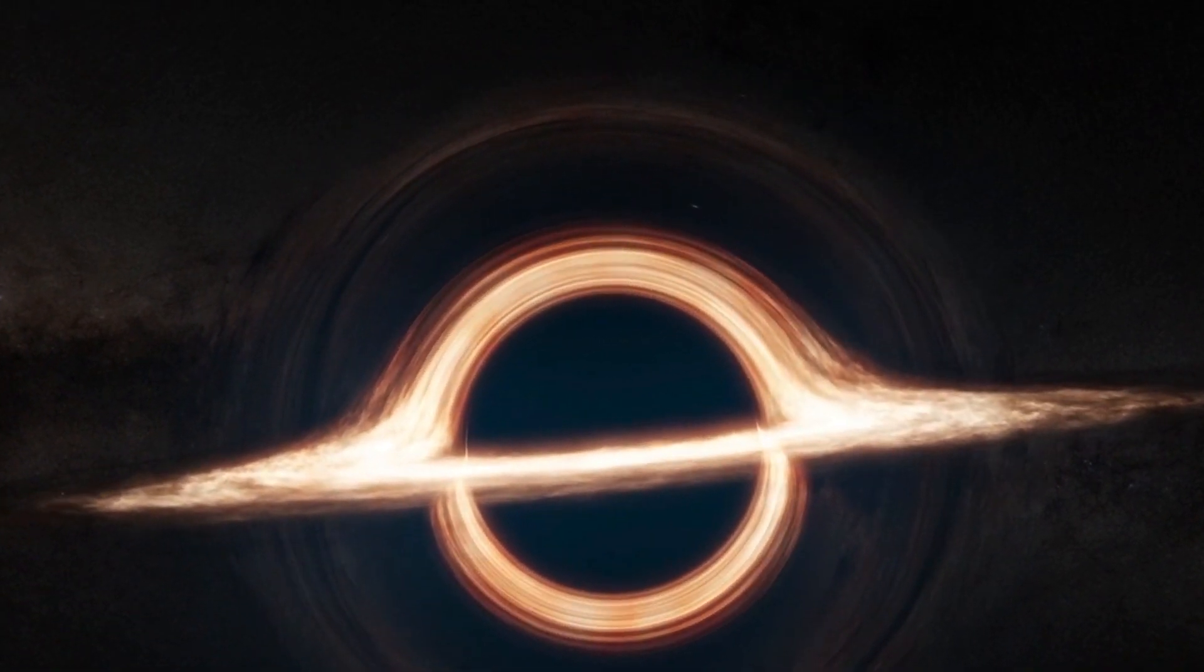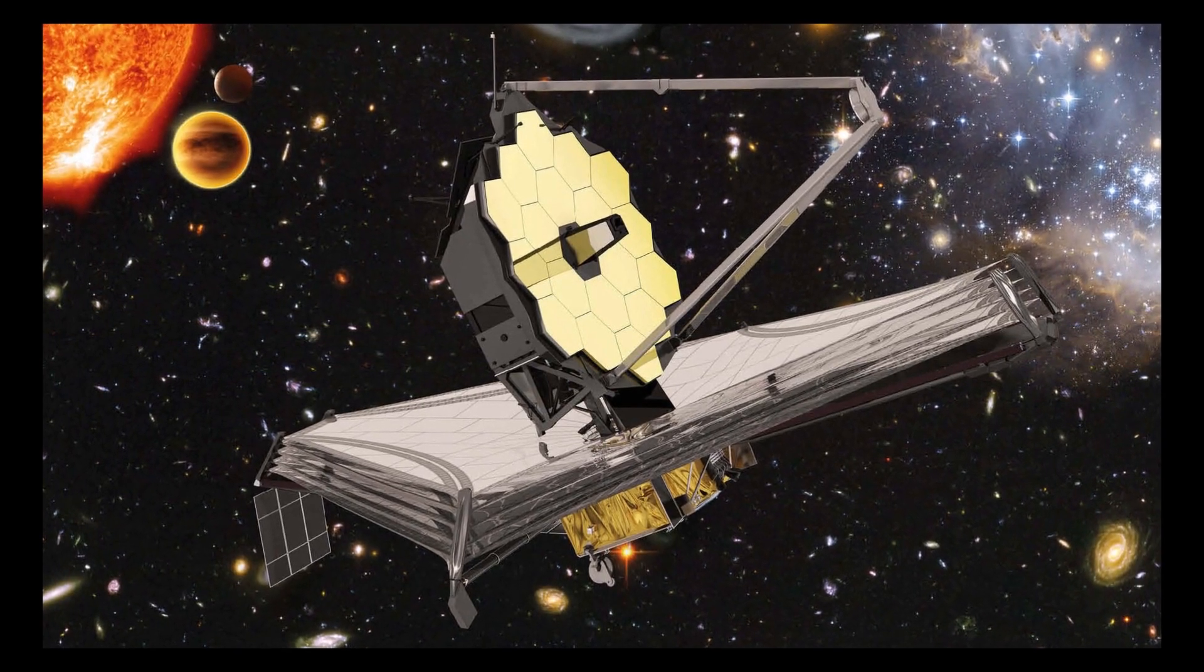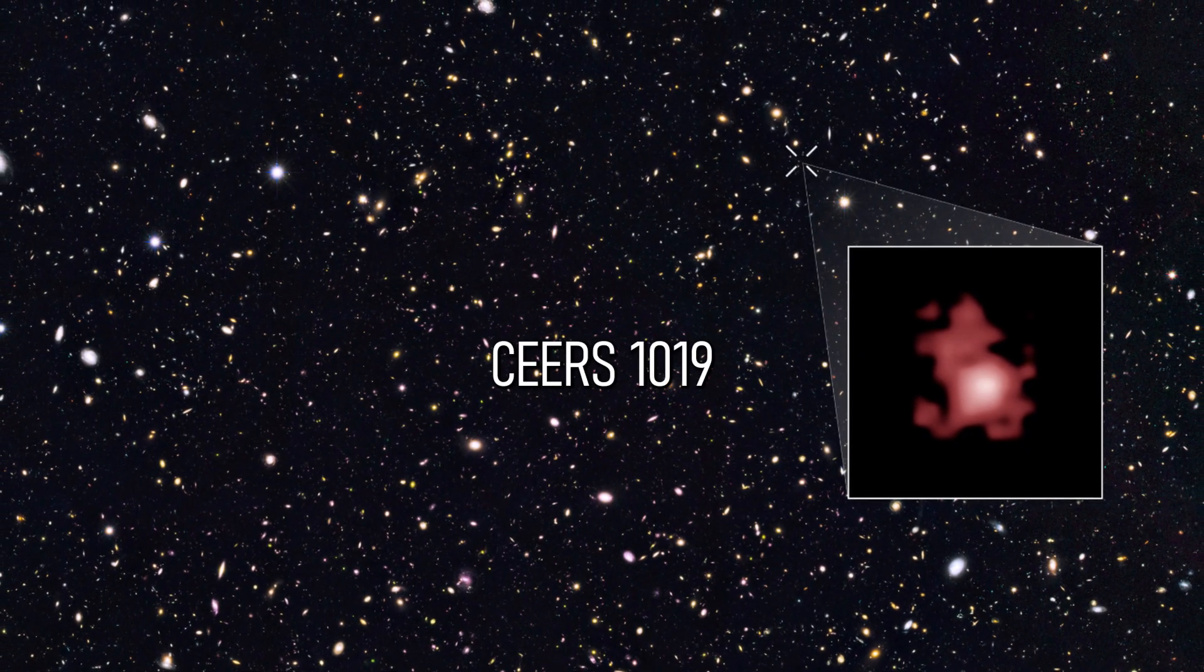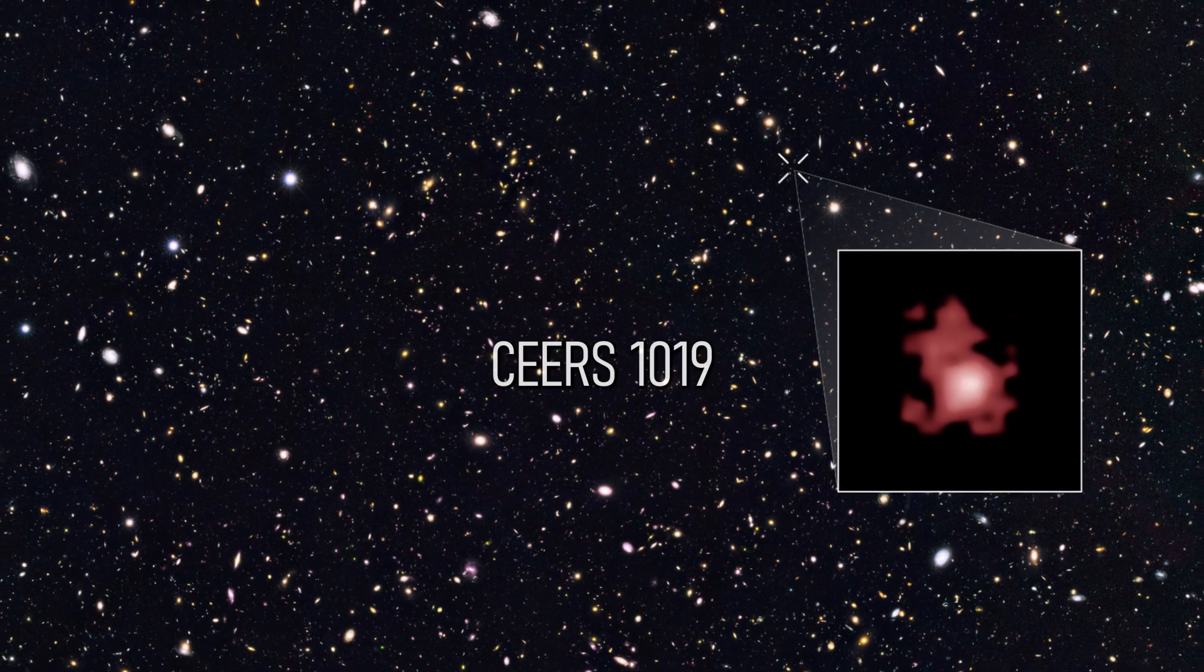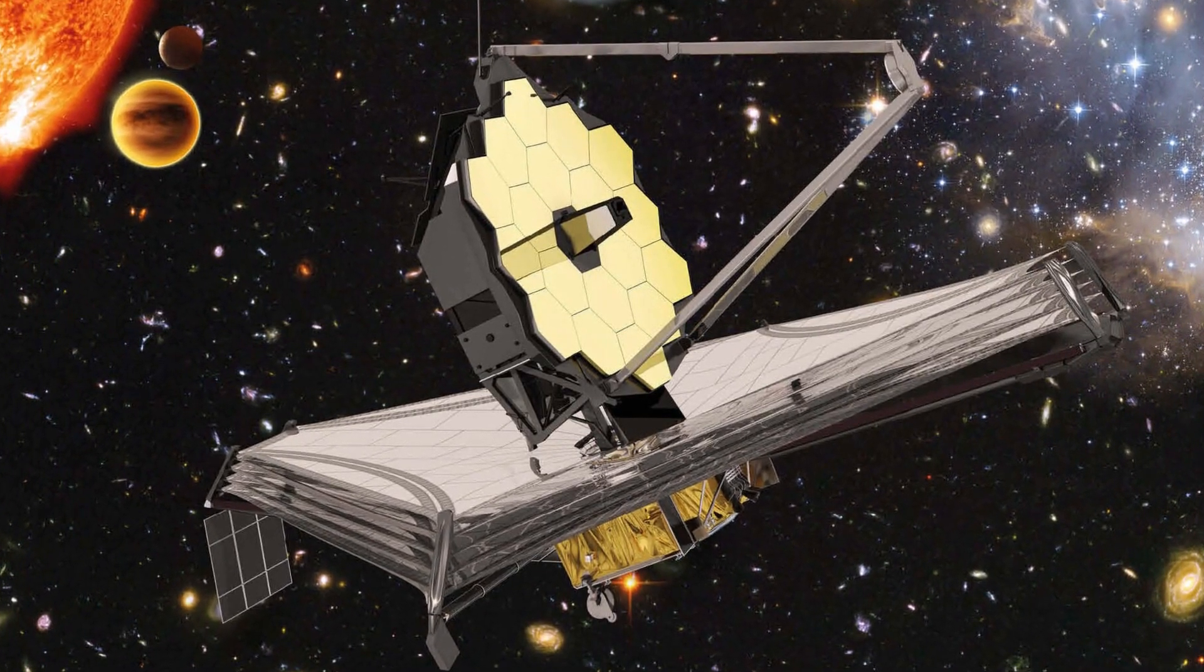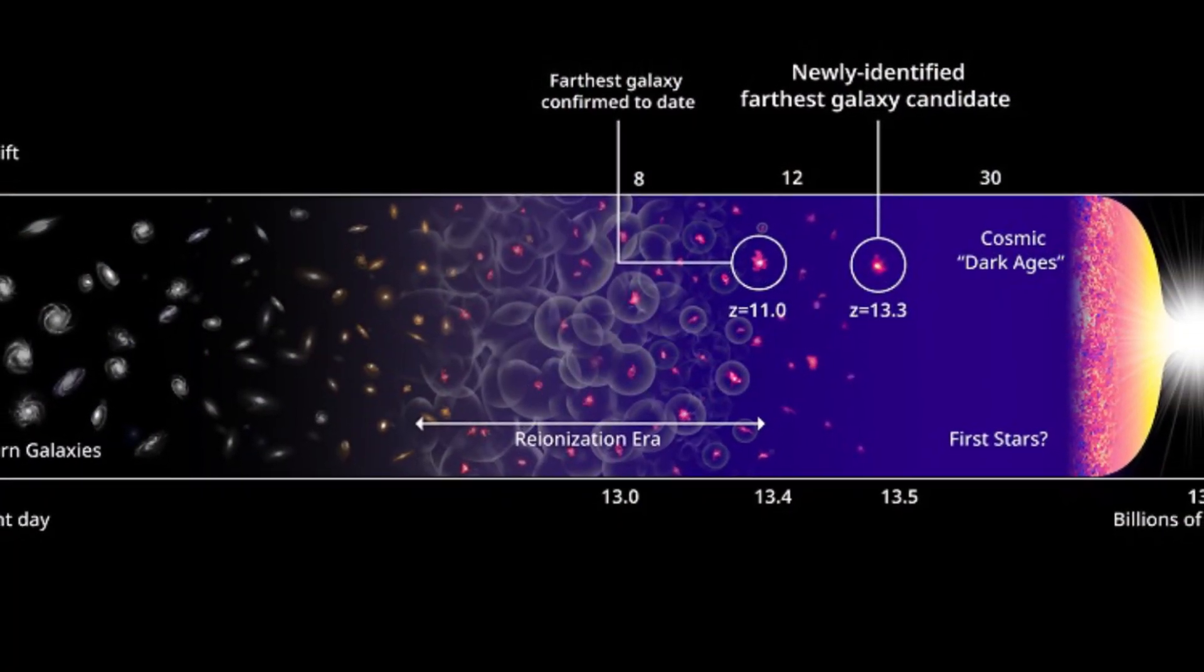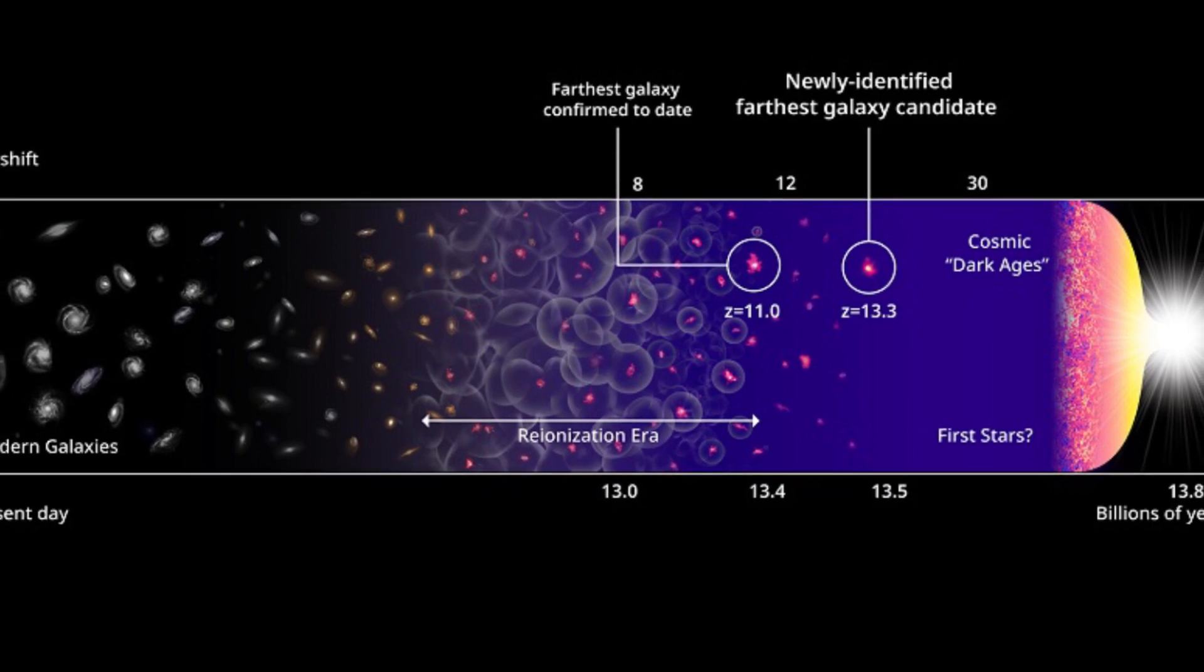This oldest and yet most distant black hole discovered by the James Webb Telescope is located in the galaxy CEERS 1019. This is a galaxy that's estimated to have formed just 570 million years after the Big Bang, which makes it one of the oldest galaxies in the universe.